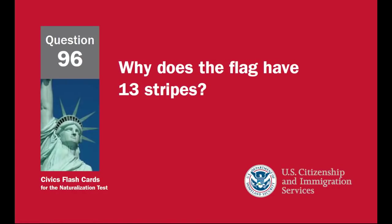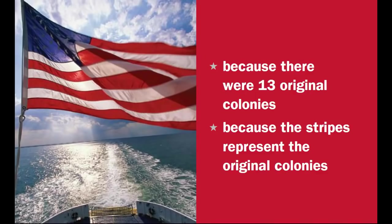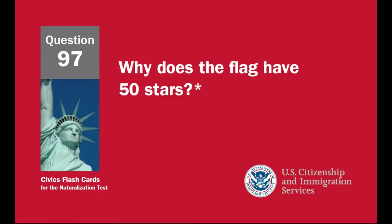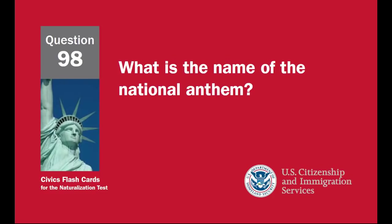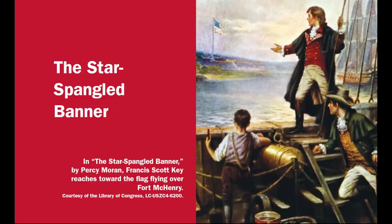Why does the flag have 13 stripes? Because there were 13 original colonies — the stripes represent the original colonies. Why does the flag have 50 stars? Because there is one star for each state, each star represents a state, because there are 50 states. What is the name of the national anthem? The Star-Spangled Banner.